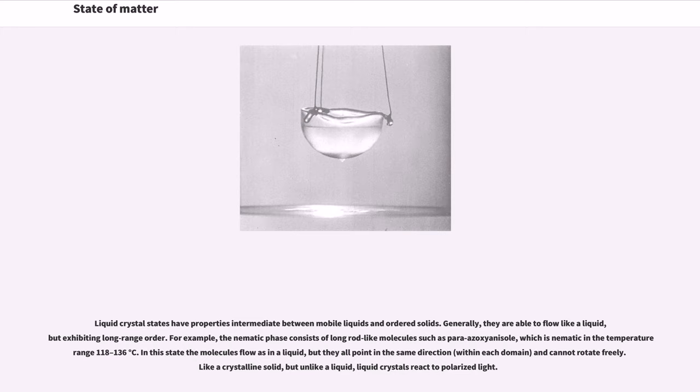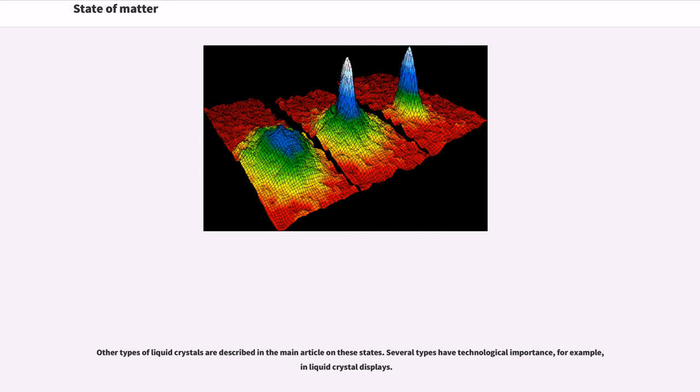For example, the nematic phase consists of long rod-like molecules such as para-azoxyanisol, which is nematic in the temperature range 118 to 136 degrees Celsius. In this state the molecules flow as in a liquid, but they all point in the same direction, within each domain, and cannot rotate freely. Like a crystalline solid, but unlike a liquid, liquid crystals react to polarized light. Other types of liquid crystals are described in the main article on these states. Several types have technological importance, for example, in liquid crystal displays.